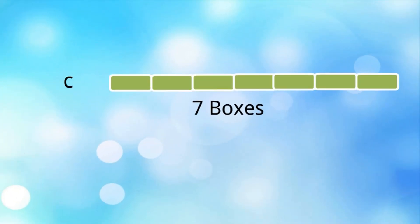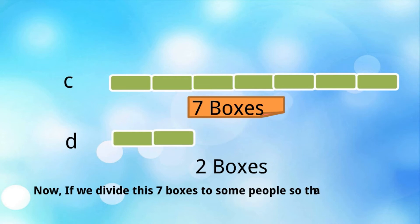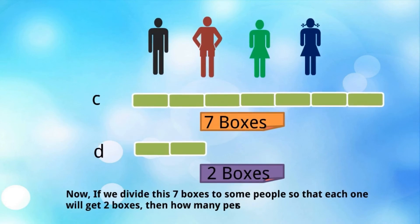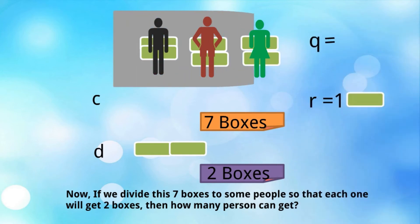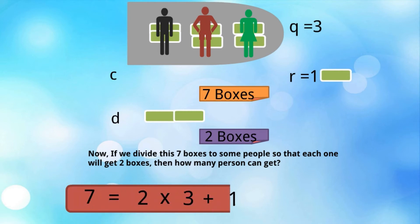Now if c = 7 boxes and d = 2 boxes: dividing 7 boxes so each person gets 2, three persons get boxes but 1 box is left over. So r = 1 (the remainder) and q = 3. From Euclid's Division Lemma: c = 7 = d × q + r = 2 × 3 + 1.